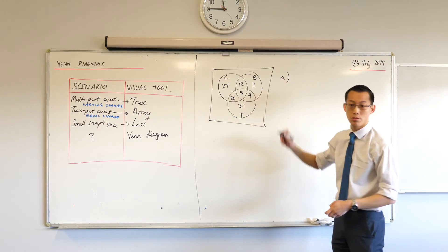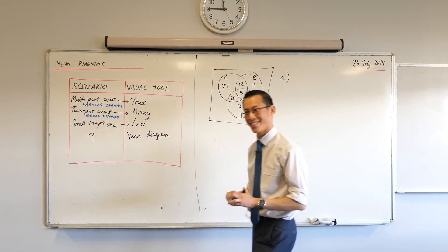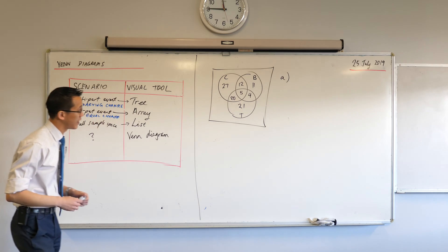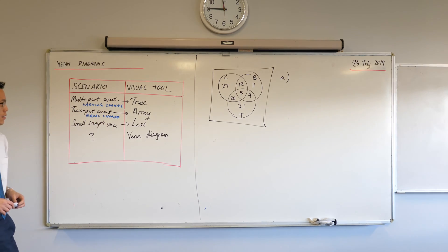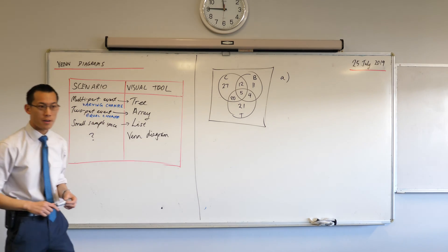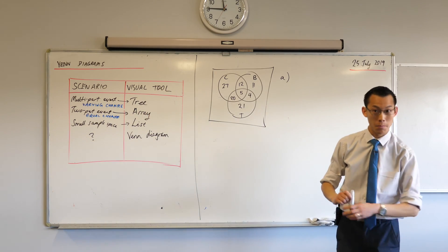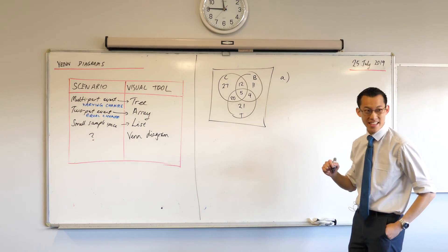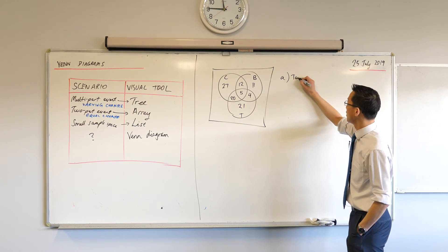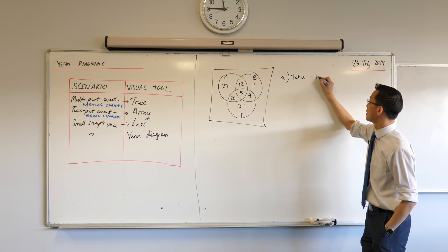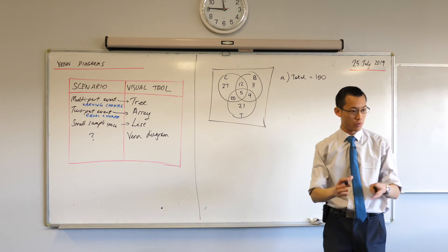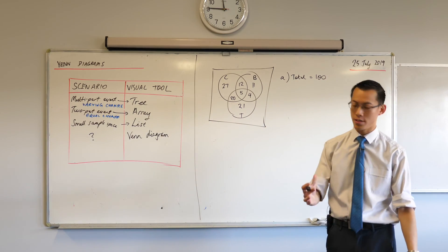We're going to take all the numbers, add them up. I think it's 100. Total equals 100. And it would be good if you could double check that yourself, just so that we can all be convinced we're on the right page.